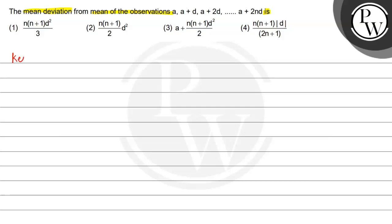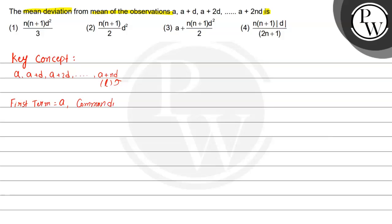The key concept to solve this question is: suppose we have been given a series like a, a+d, a+2d, and so on up to a+nd. We can write a+nd as l, where l is the last term of this series. So we have first term a, common difference d, and last term l. Since the common difference is always the same, this series is called an arithmetic progression, also denoted as AP.